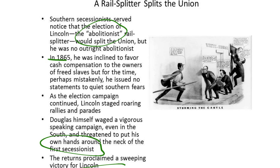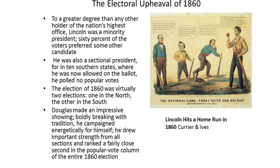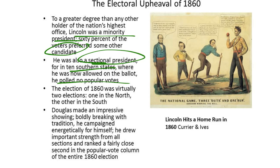The returns proclaimed a sweeping victory for Lincoln in the election of 1860. To a greater degree than any other holder of the nation's highest office, Lincoln was a minority president — only 60% of the voters preferred another candidate. He was also a sectional president, for in 10 Southern states where he was not allowed on the ballot, he polled no popular votes at all. The election of 1860 was virtually two elections, one in the North, the other in the South. Douglas made an impressive showing, boldly breaking tradition, campaigning energetically and drawing important strength from all sections, ranking a fairly close second in the popular vote.